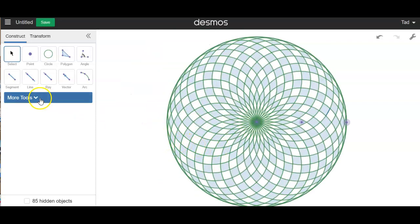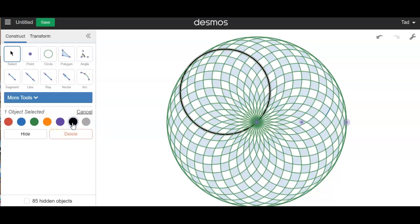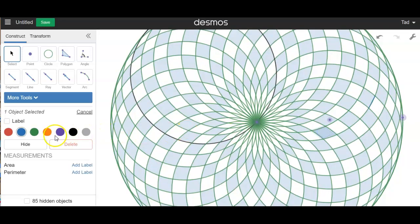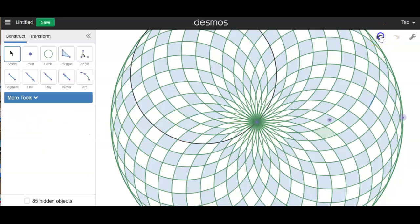And of course you can also play around with the colors. So I could make this, I could have made the circles black. I could have made the polygons any color I wanted. The default was this blue. I could have made them green. Go back and change that.